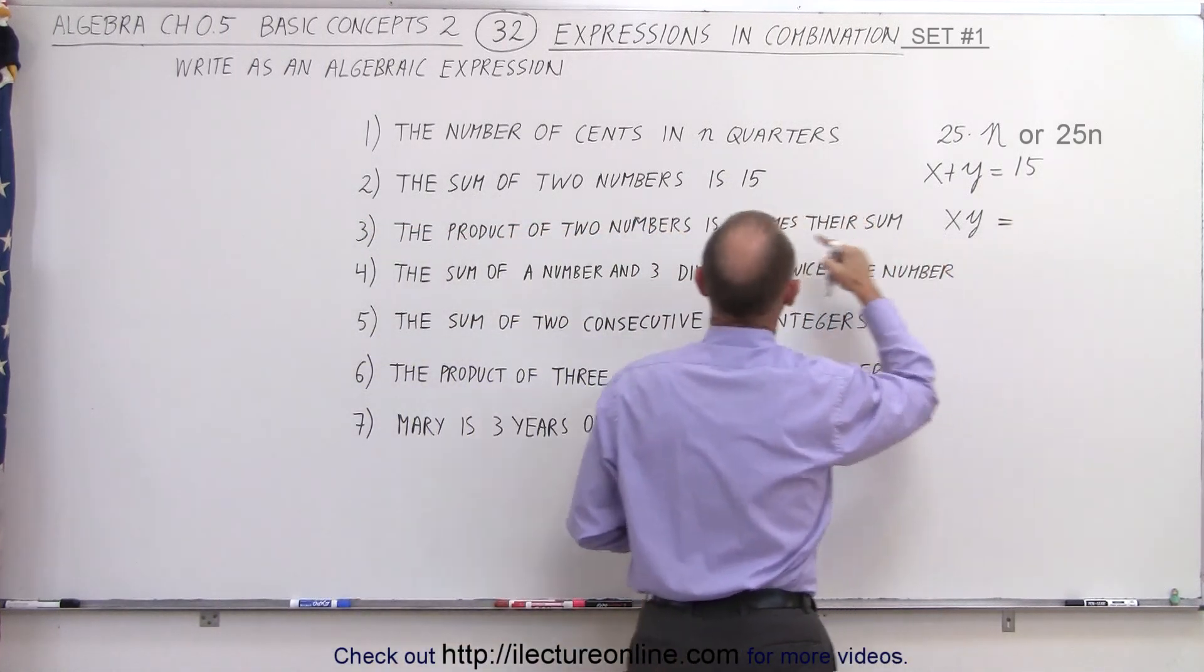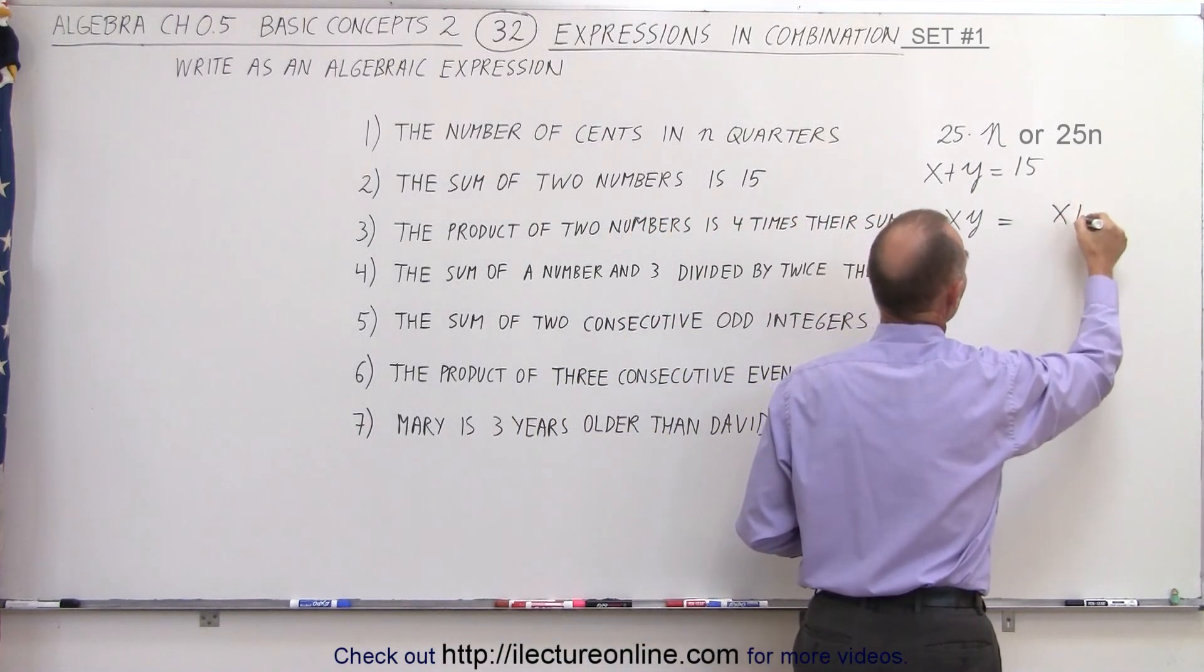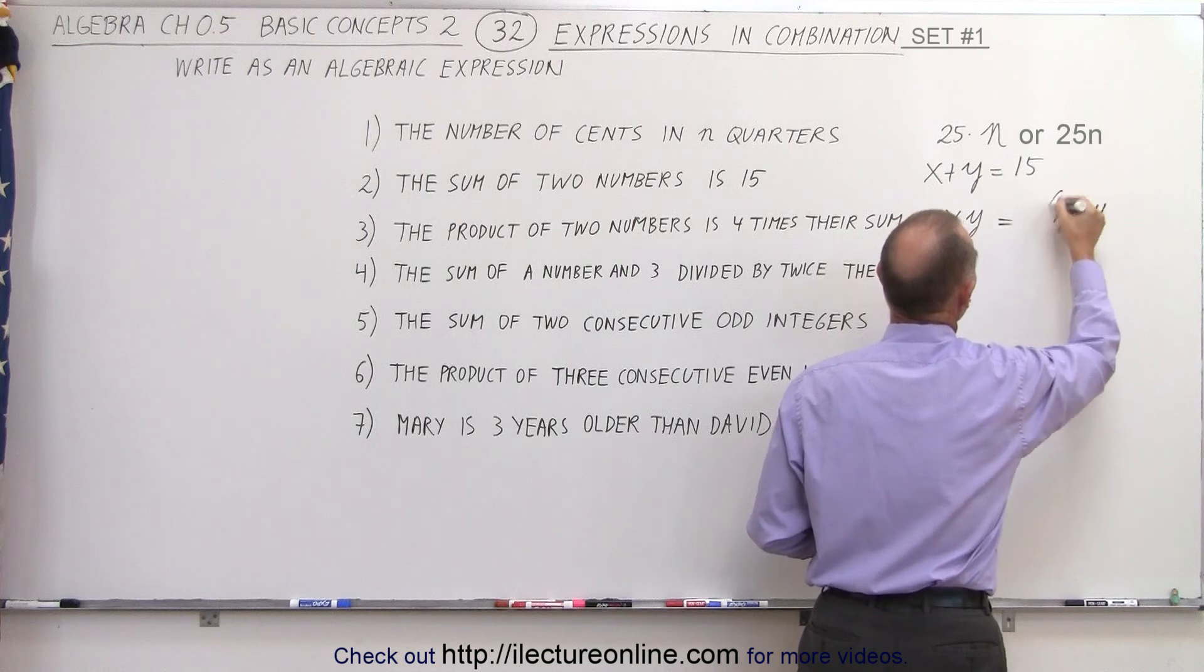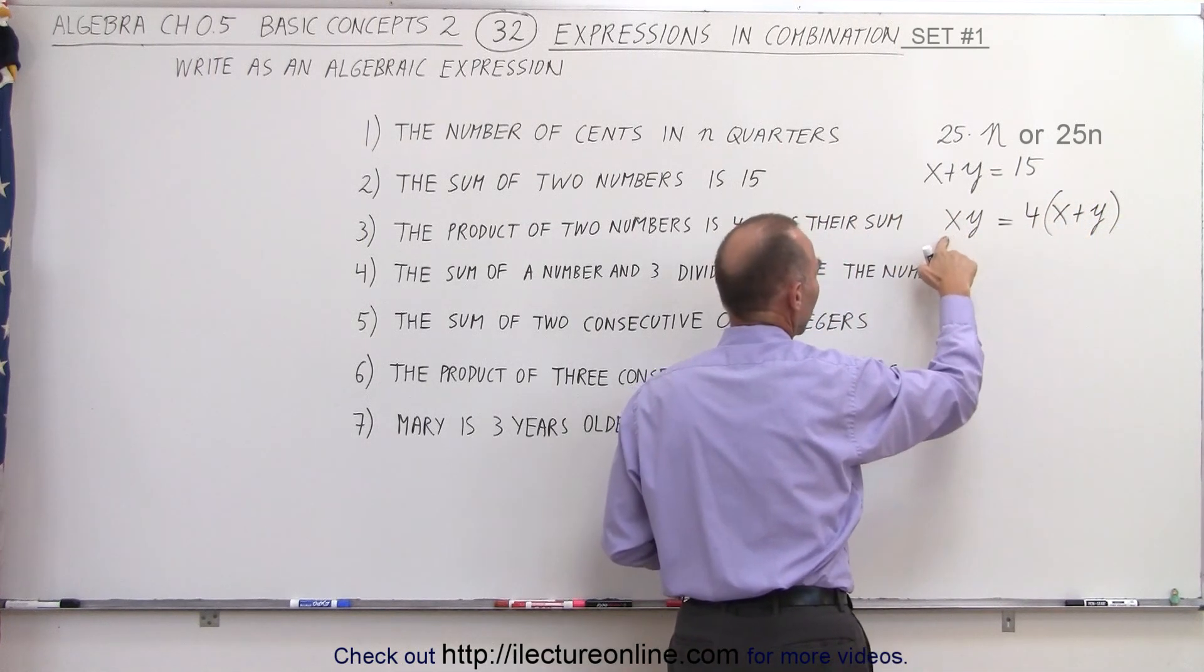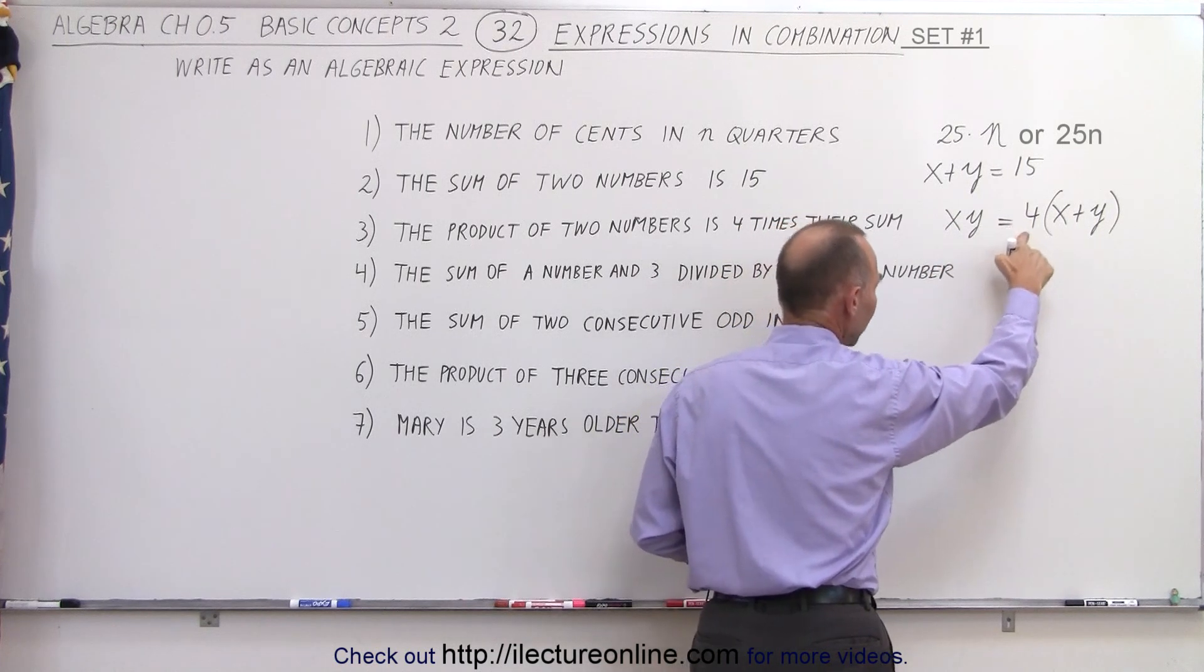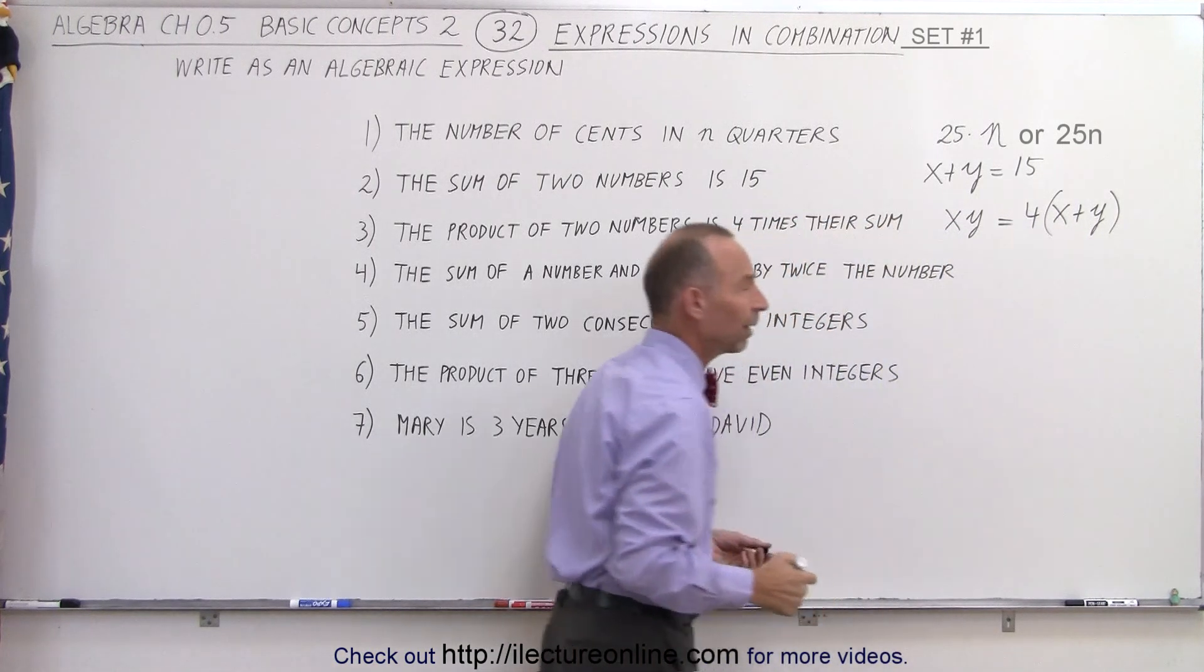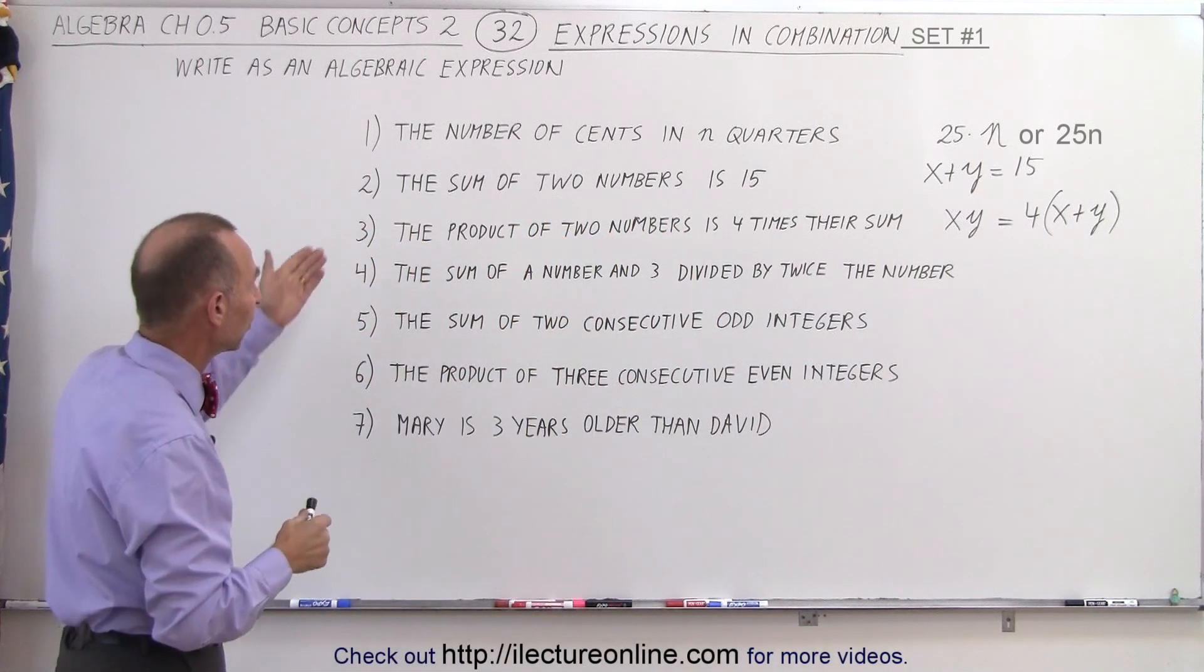So that means it is equal to four times their sum. Their sum would be x plus y, and four times that, we have to multiply that by four. So this reads, the product of two numbers, x and y, is equal to four times the sum of x and y. And so that's the expression or statement that we can write equivalent to that sentence.